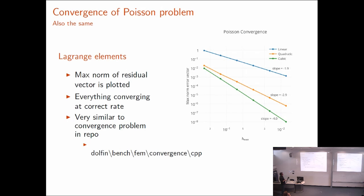Your friend thinks about it for about two seconds and agrees that this is, in fact, the solution. This is the textbook convergence test — the norm of the residual for Lagrange elements of different order converging at exactly the right rate. Actually, this is very similar to the same problem in the Dolphin benchmark repo.